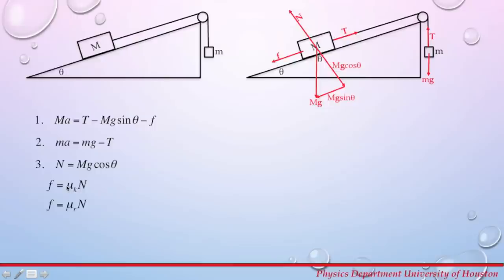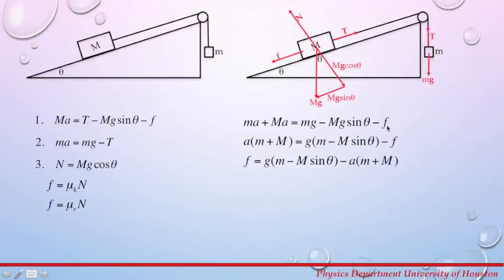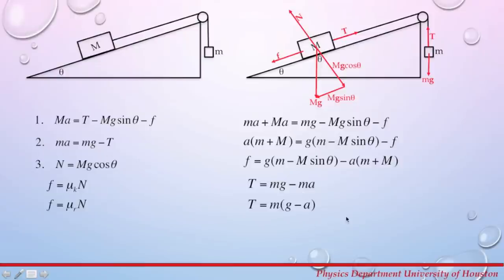We can calculate the kinetic coefficient of friction for the sliding object and the rolling coefficient of friction for the cart. The relationship between friction force and normal force is given by these two equations. To calculate friction force, combine equations one and two by adding them together, then group terms to solve for friction force. To calculate tension, simply solve equation two for T.